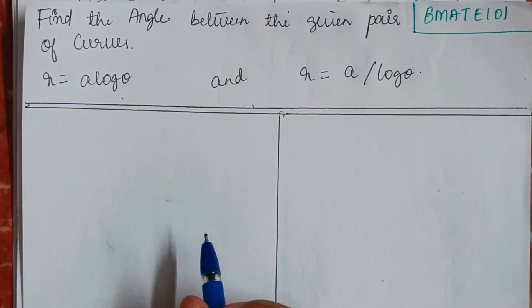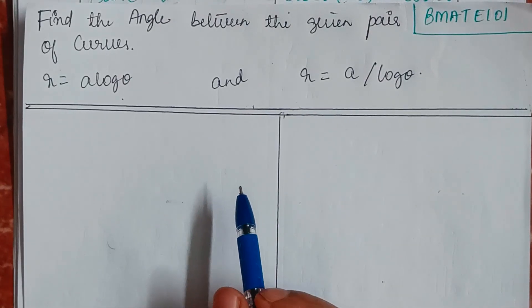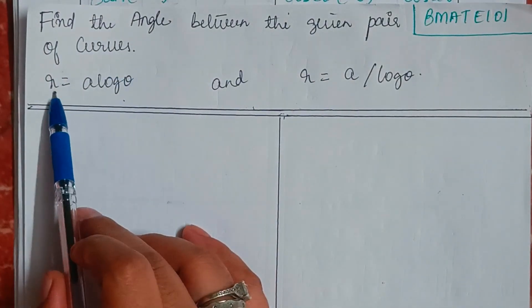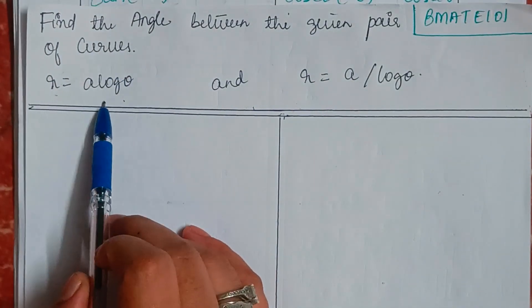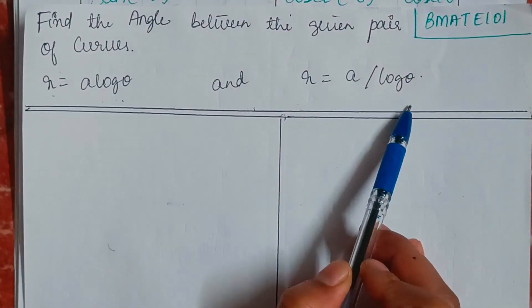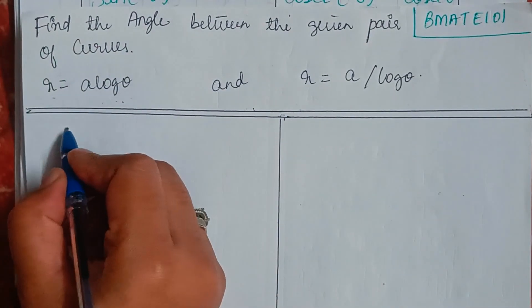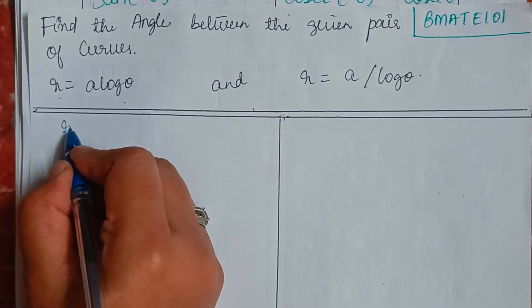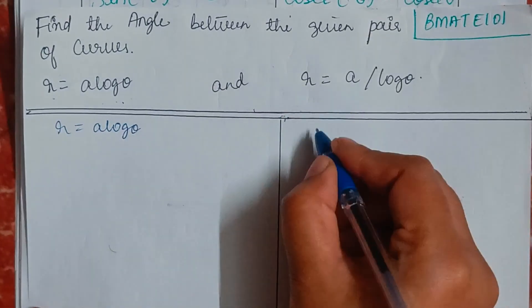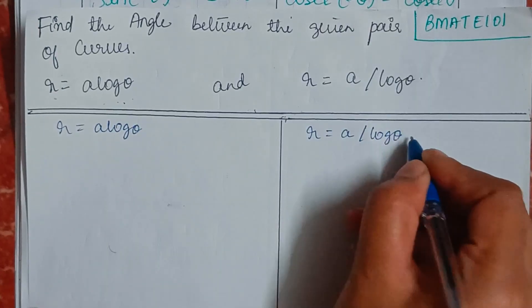Hello everyone, welcome back to my YouTube channel, Learn with Sumi. In this video, we are going to find the angle between the given pair of curves: r equals a log θ and r equals a divided by log θ. I'll write down the question here.